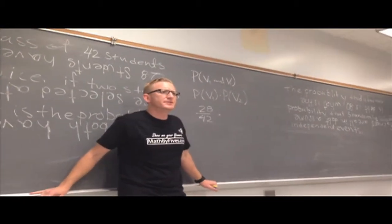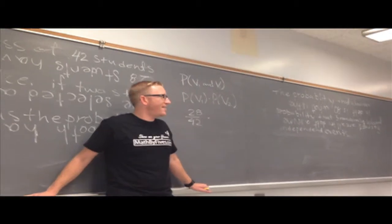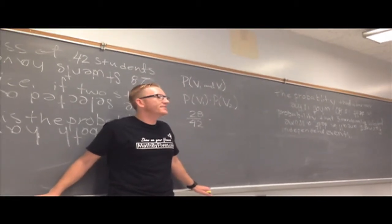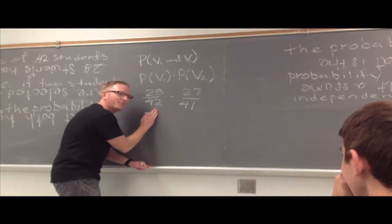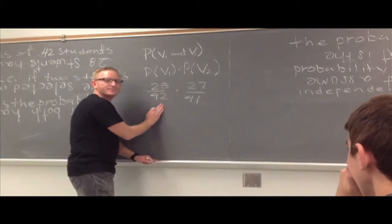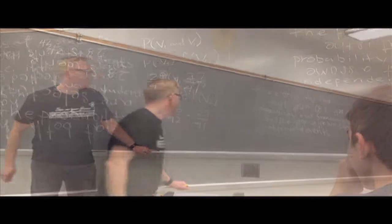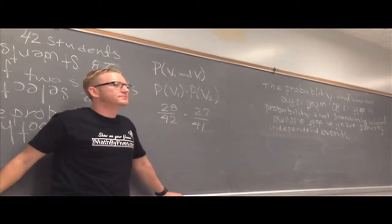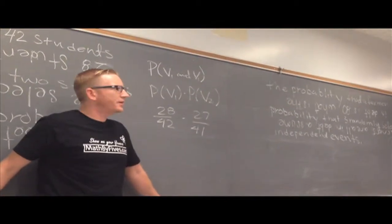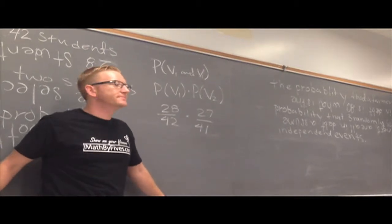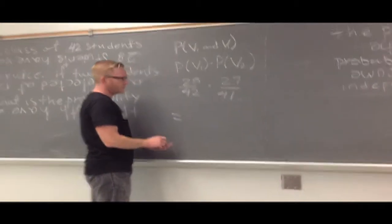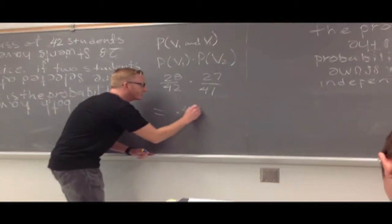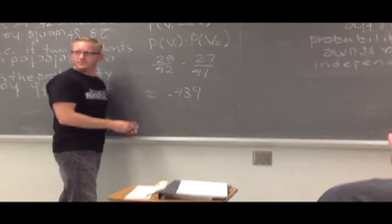What's the chance that the second one volunteered? 27 out of 41. Because this one already volunteered, so we had to take her out of the pool and consider what would happen to the pool of volunteers when that happened. So after we count on that, what did we get? 0.439. Fine.